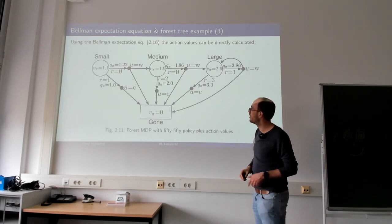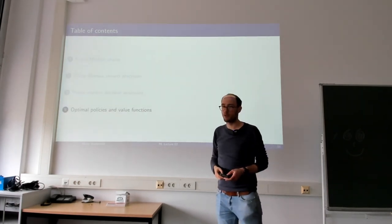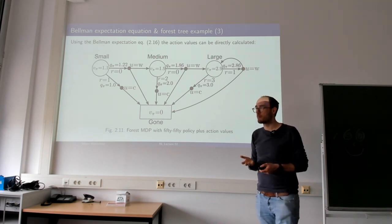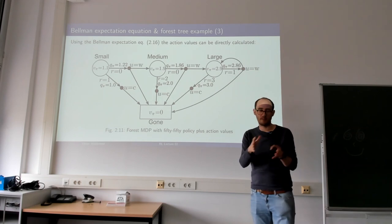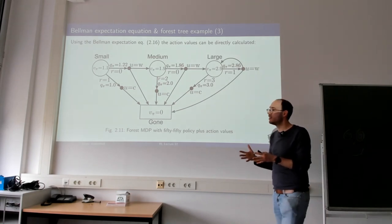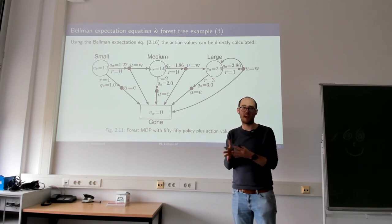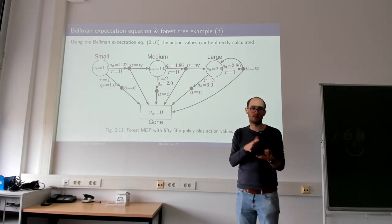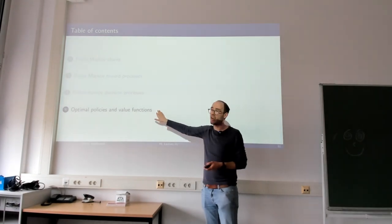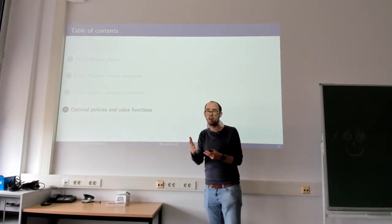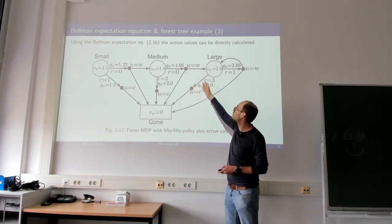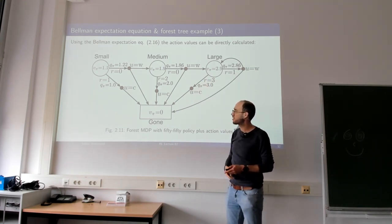We can also calculate state-action values: each Q value equals the instantaneous reward plus the discounted state value of the next state. For example, Q(x1, cut) = 1 + 0.8 × 0 = 1.0, while Q(x1, wait) = 0 + 0.8 × 1.9 ≈ 1.22. So far we have only done evaluation - analyzing given policies. What we have not yet discussed is how to find optimal policies, which will be addressed next.